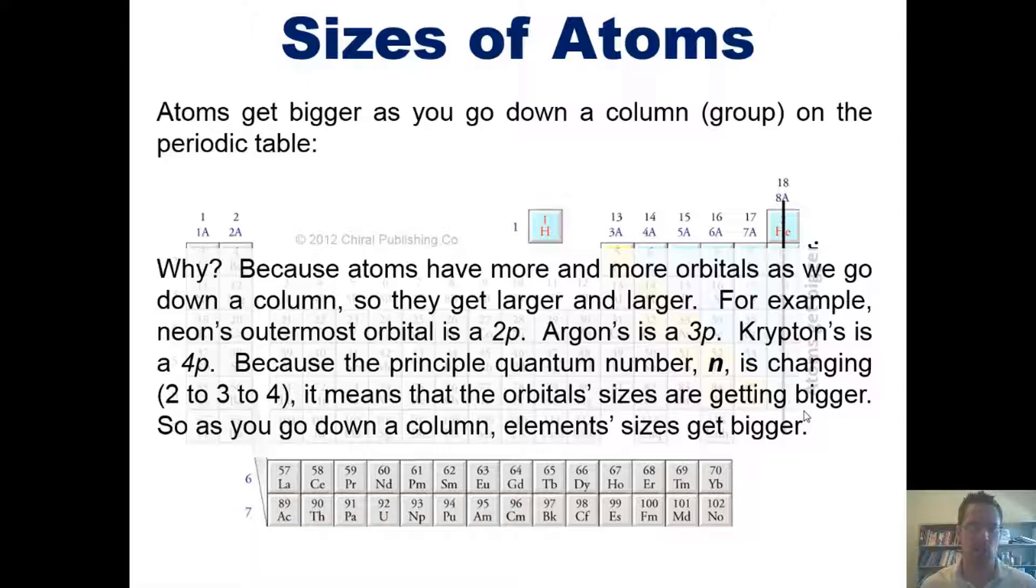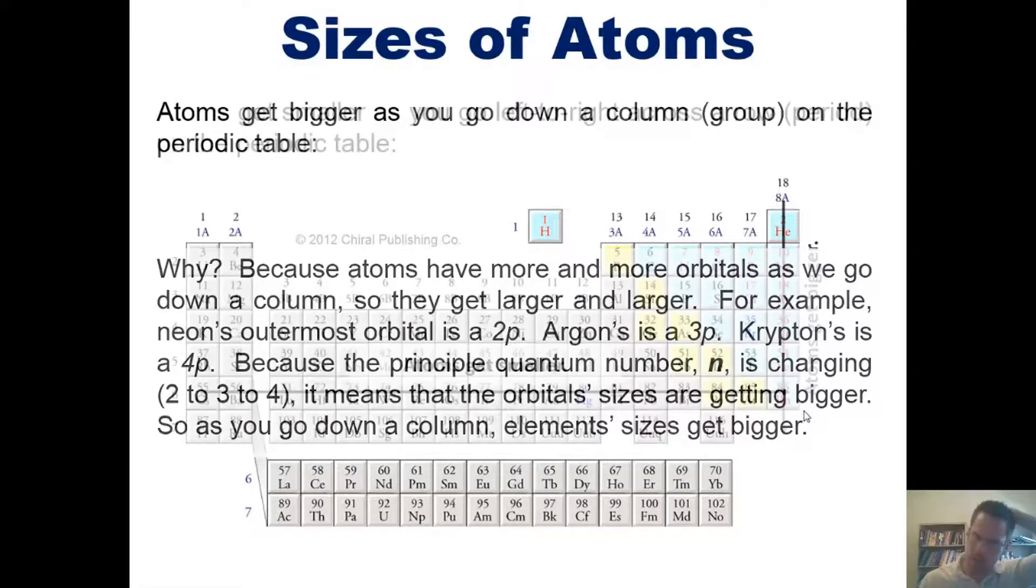For example, neon's outermost orbital is a 2p, while argon's, which is just below it, is a 3p. Krypton's, which is below argon, is a 4p. Because the principal quantum number n is changing, going from 2 to 3 to 4, it means the orbital sizes are getting bigger. 4p orbitals are larger than 3ps, which are larger than 2ps, and so forth. So as you go down a column, element sizes get bigger.